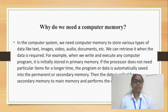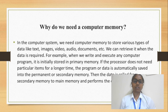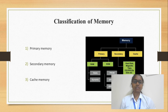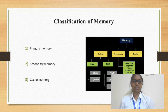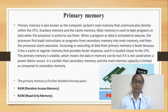Why do we need programs, software, files, images, documents, audios and videos in a computer? We can store all of these things in computer memory — that's why we need it. Computer memory is basically divided into three parts: primary memory, secondary memory, and cache memory.